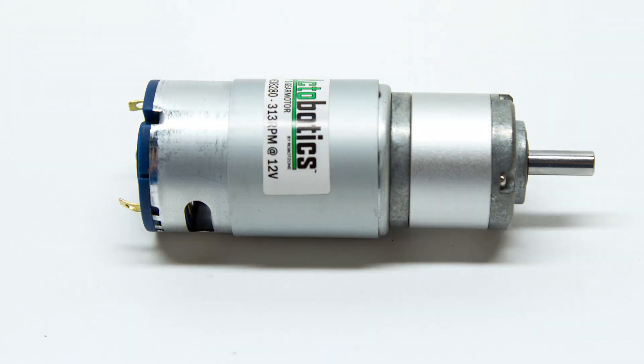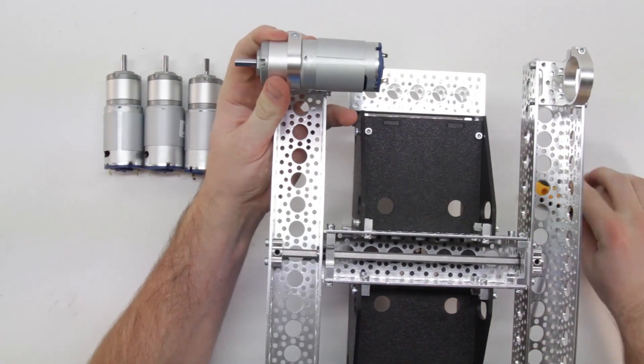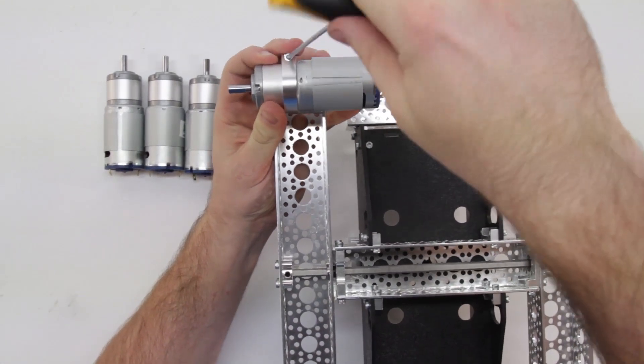Next, you'll need the four precision planetary gear motors. Slide each of the gear motors into the clamping mounts until the wide section of the motor is firmly against the mount. Tighten these in place using the hex key.